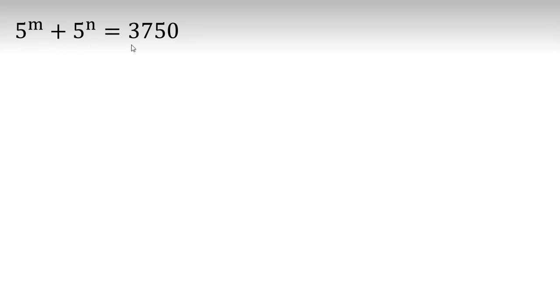We have 5^m plus 5^n equal to 3750, where m and n are integers. We want to find m and n, and first I want to prove that m and n should be positive — why?